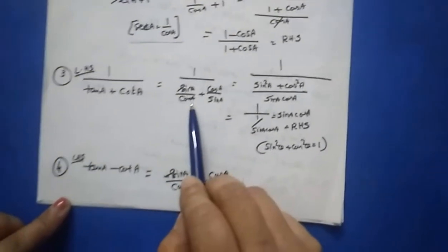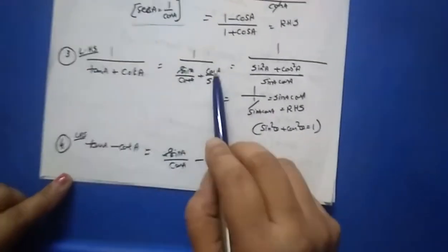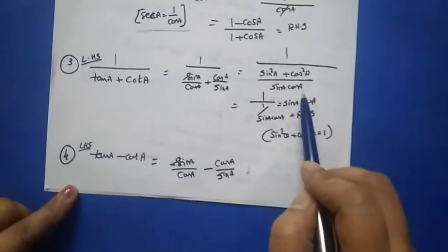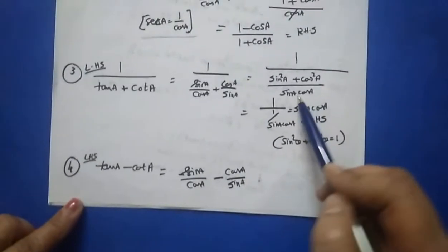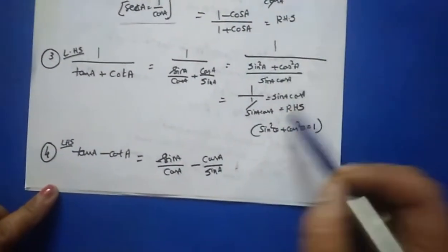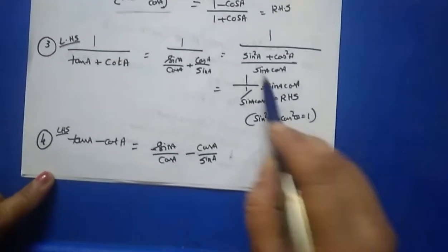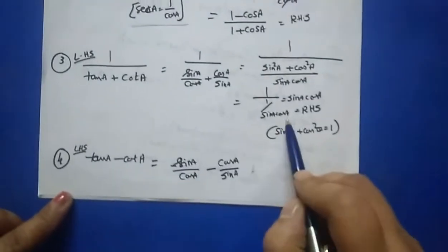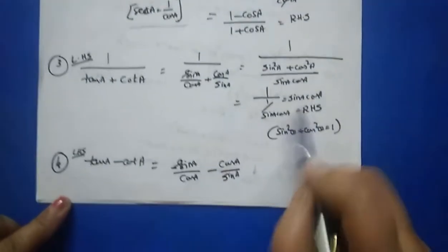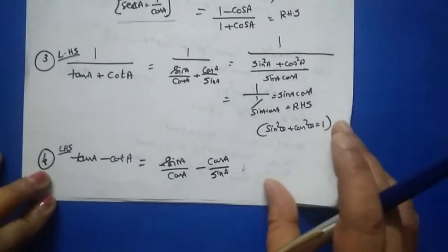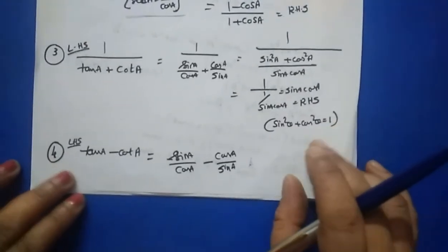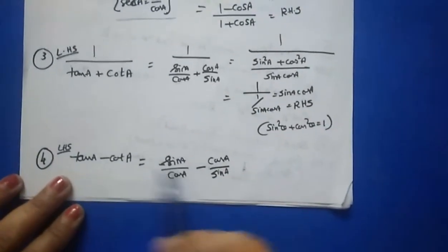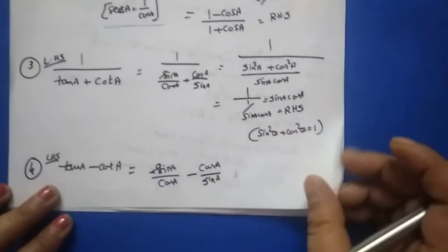Question number three, left hand side: 1/(tan a + cot a). Write tan a as sin a/cos a and cot a as cos a/sin a. Take LCM; the denominator of the denominator goes to the numerator. You know sin²a + cos²a = 1, so you get the right hand side. Question number four is similar: (tan a − cot a), where tan a = sin a/cos a and cot a = cos a/sin a.